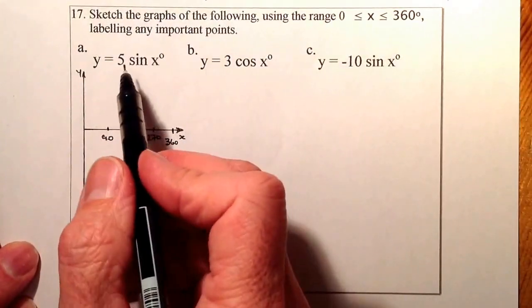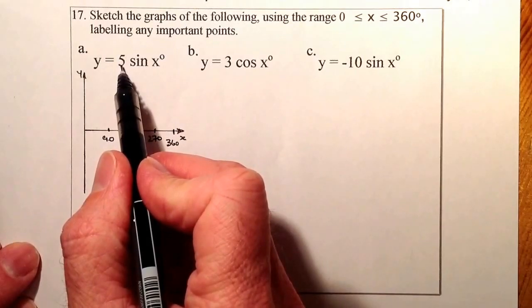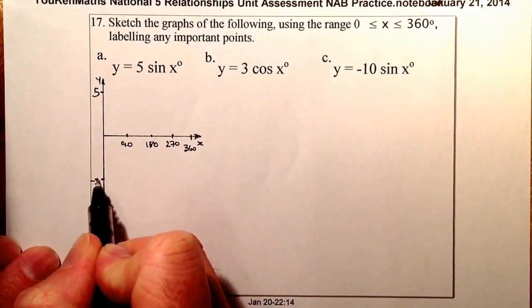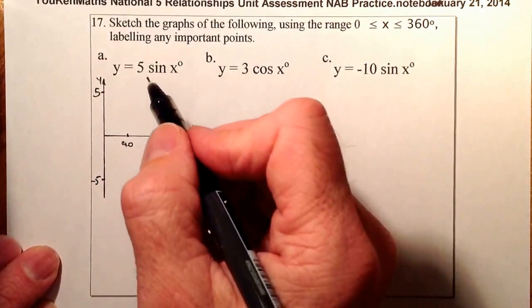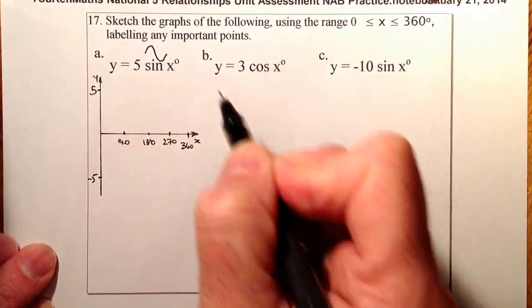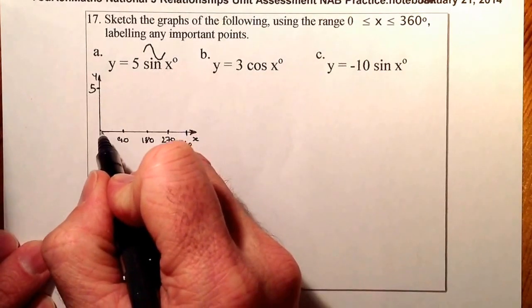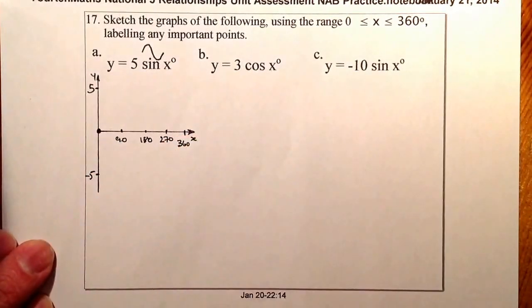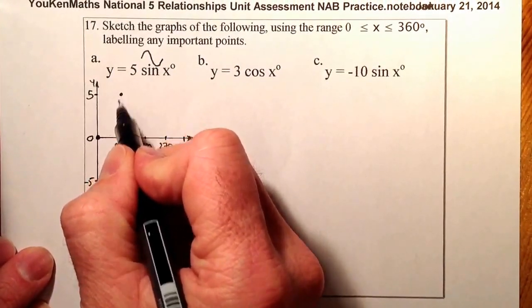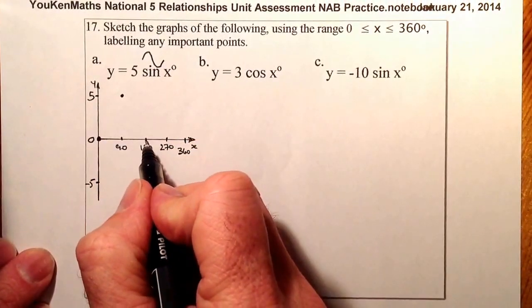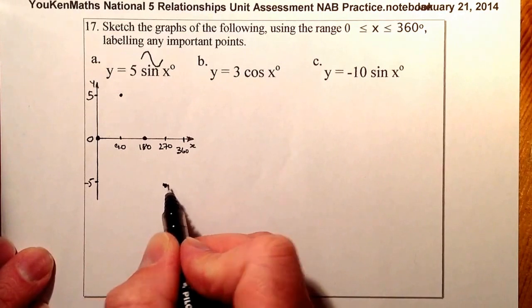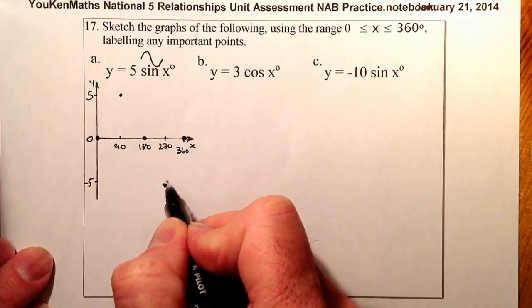Because I just need to do a sketch, I'll look at the amplitude, which is 5. So the graph's going to go up to 5 and down to minus 5. The sine curve goes from 0 up and then back down — that's the normal shape. I'll put dots where the graph passes through: (0, 0), up to (90, 5), back through the x-axis at 180, down to (270, minus 5), and back to 360.